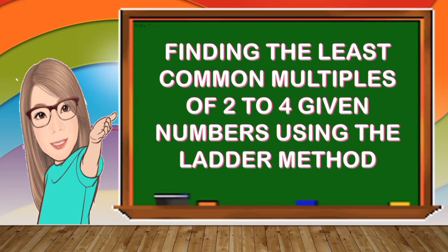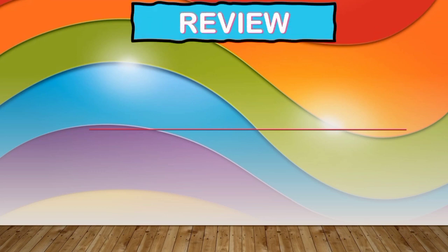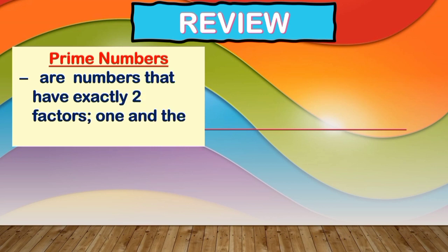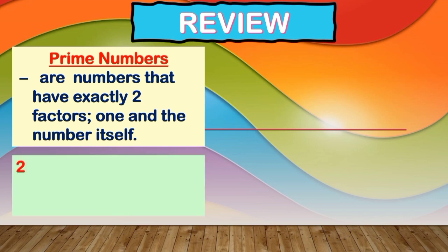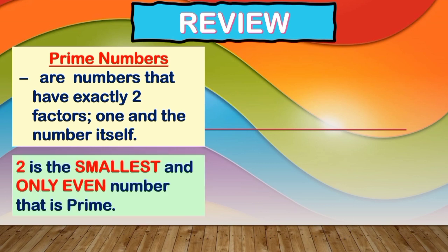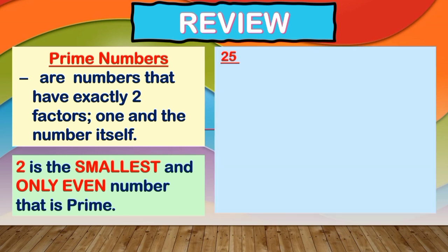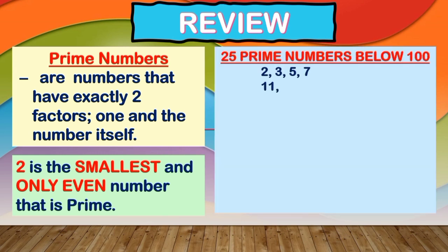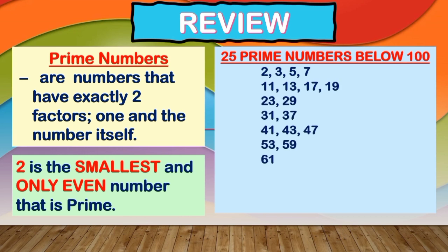Today, we will discuss about finding the least common multiples of 2 to 4 given numbers using the ladder method. Before we continue, let us recall the following. First, prime numbers are numbers that have exactly 2 factors: 1 and the number itself. Second, 2 is the smallest and only even number that is prime. And lastly, the list of 25 prime numbers below 100 are as follows.